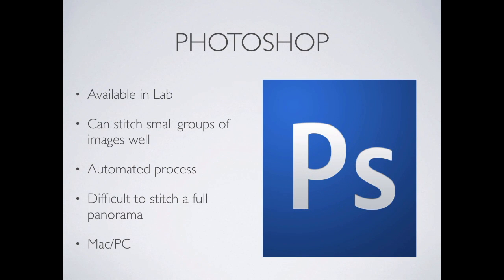A couple of different software packages let us do this. The first is Photoshop, available in the labs on Mac or PC. It's really good at small groups of images — you could throw maybe ten images at it and it'll do a great job. If you throw fifty images at it, not so good. It also loves doing about 180 degrees — it doesn't like 360. When you start throwing 360 at it, it gets very confused as to where the end is and where the start is, so it's not the best for really large format 360 panoramas.